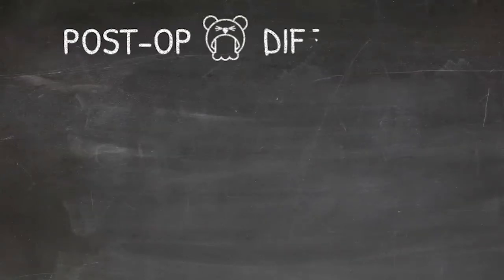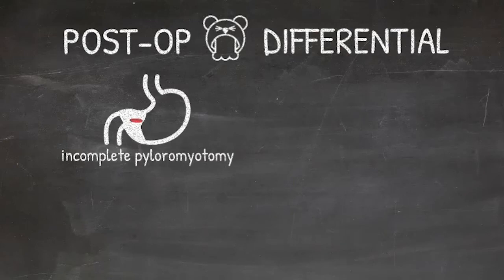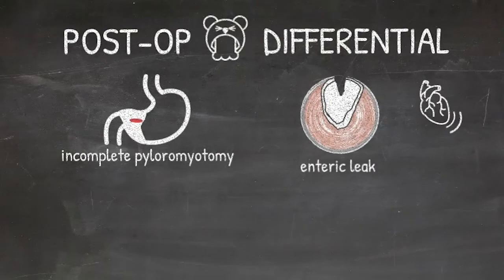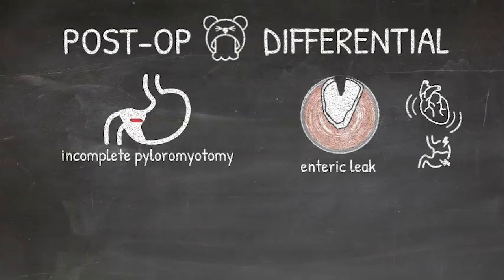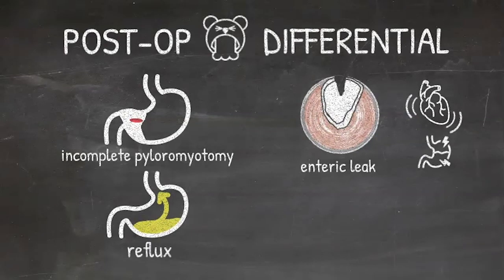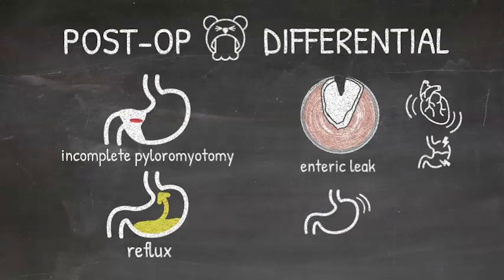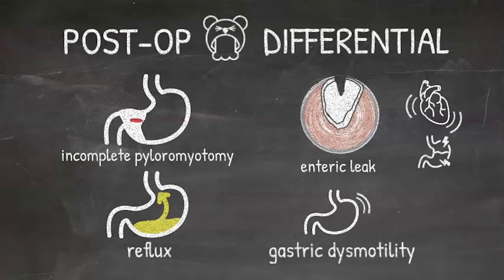However, your differential should also include an incomplete myotomy. This may require a repeat myotomy, but is usually very rare. A leak from mucosal perforation can have other signs such as tachycardia and worsening abdominal tenderness. Esophageal reflux disease can also present as post-op emesis. It is important to ask history of reflux prior to developing pyloric stenosis symptoms as they may persist after the surgery. It can also be from gastric dysmotility from prolonged symptoms.